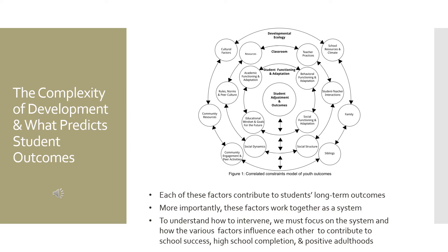Those four things come together to contribute to the student's overall function and adaptation in the classroom. At the center, we have the student's actual adjustment and outcomes. All three different levels operate together, influencing each other, and all contribute to the student's adjustment and outcomes — and in turn, the student's adjustment and outcomes can influence each of these factors. That's why we call this a system of correlated constraints, where all different factors work together to contribute to each other as they influence the student's developmental pathway.